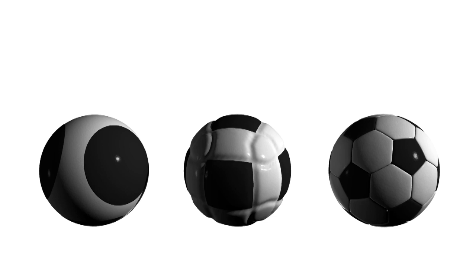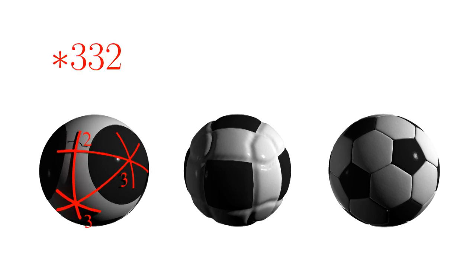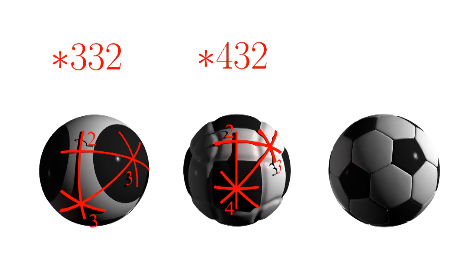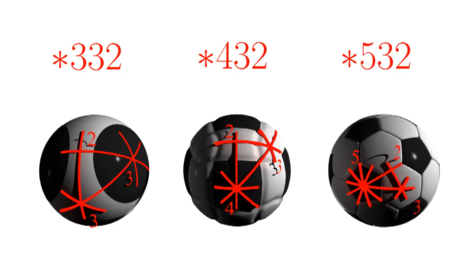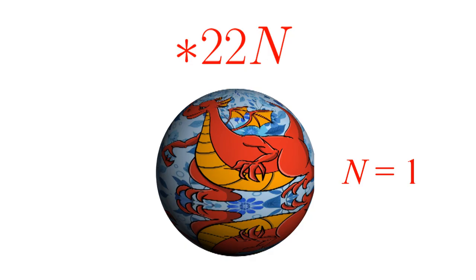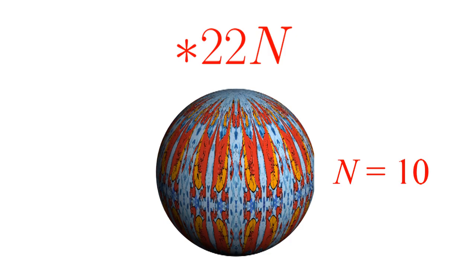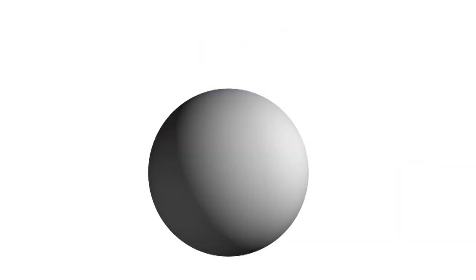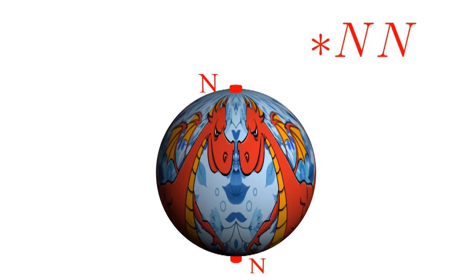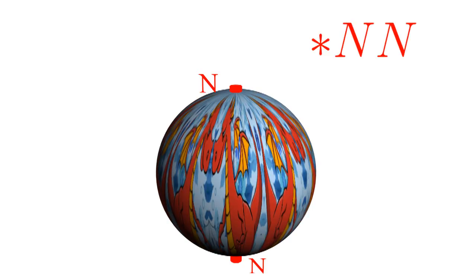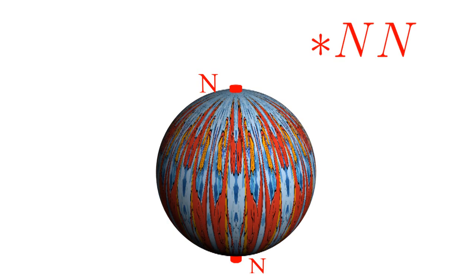For a three-sided orbifold, these reflections are allowed: star-three-three-two, star-four-three-two, star-five-three-two. We can also do star-two-two-n, where n can be any number. Spheres can have two-sided polygons, but their two angles must be the same — this gives us star-n-n for any n. In total, there are five symmetries that just use reflection.